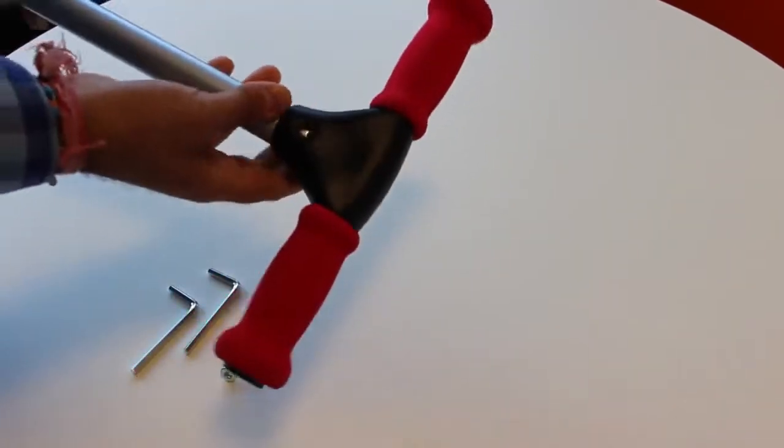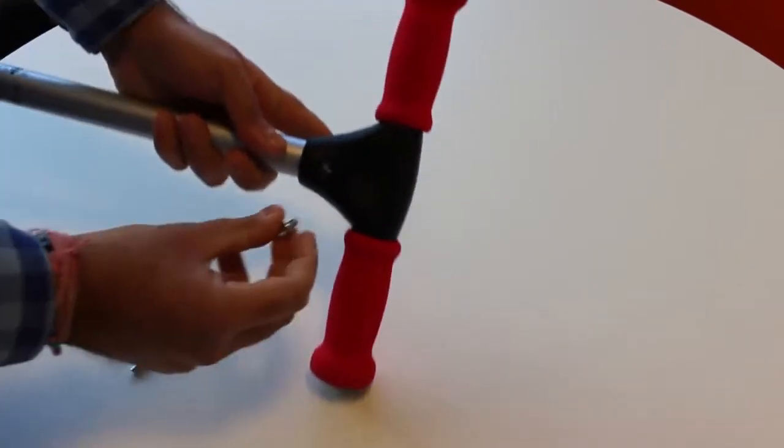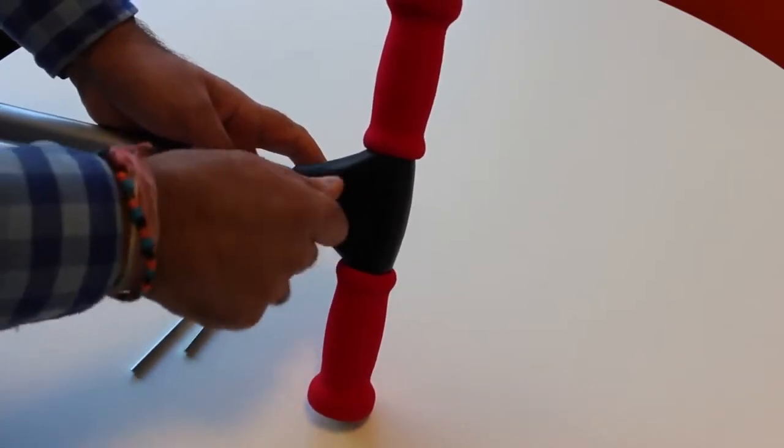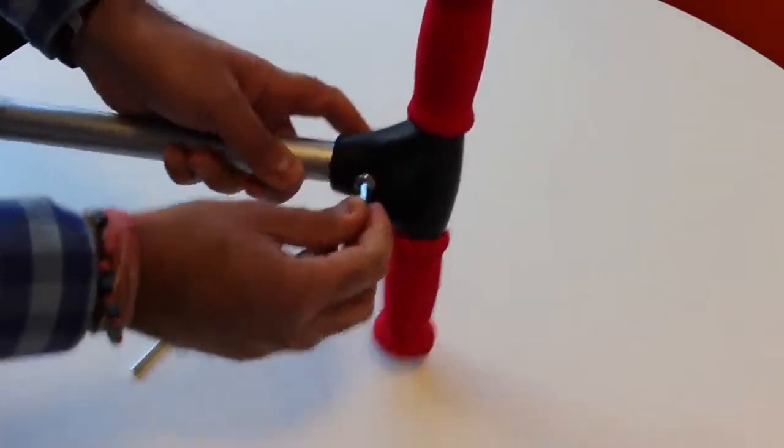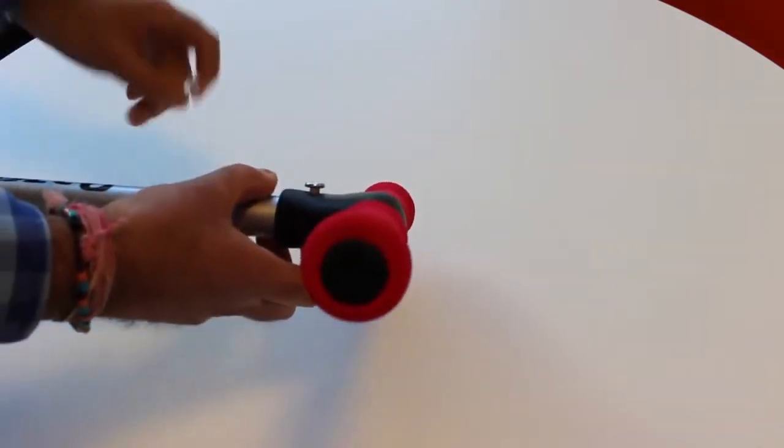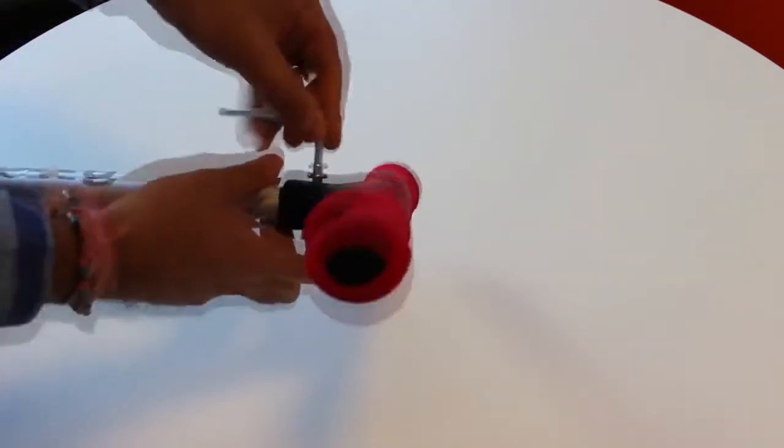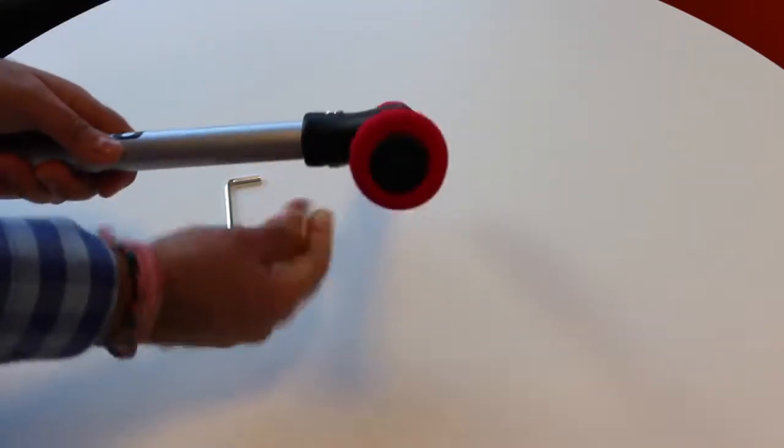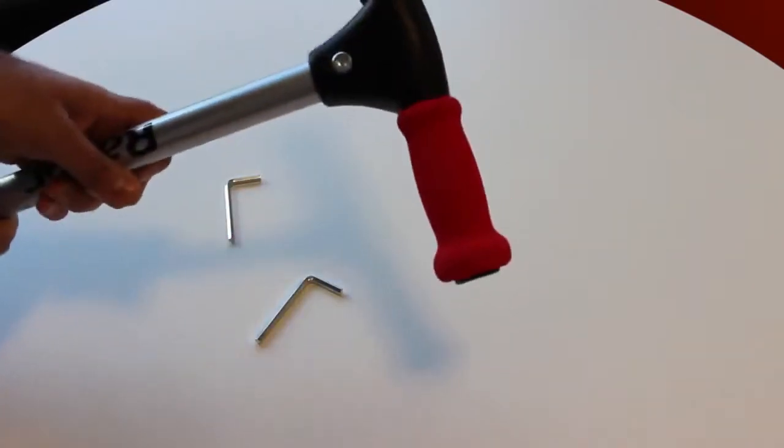Put the allen key nut and bolt through and tighten up using the supplied keys. That's all on fully tightened now.